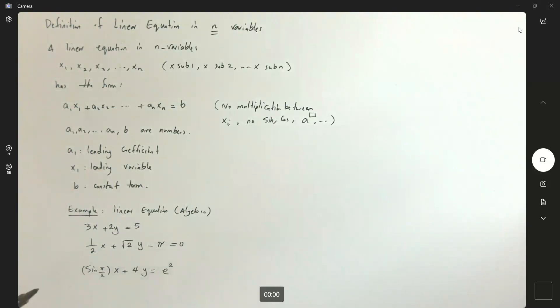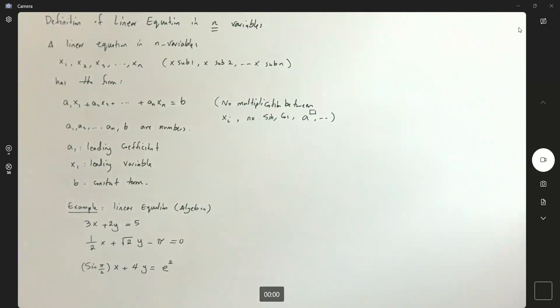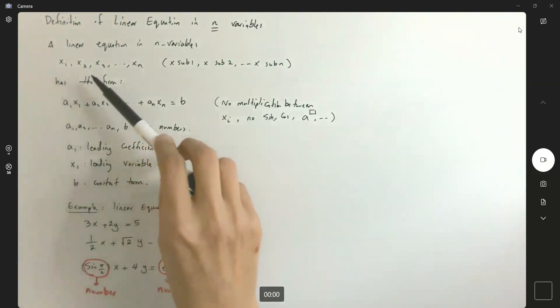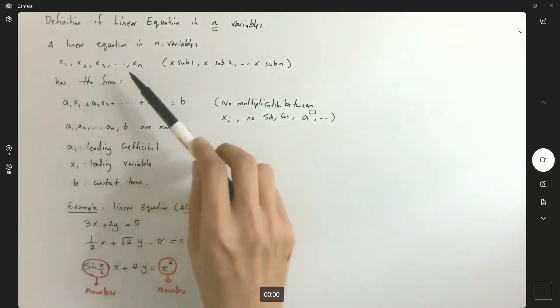Note that each one of these are numbers. So sine of pi over 2 is just 1, so you have a number. And e to power 2, as you remember, e is just a number. And we raise that to the second power is another number. So we can convert this using x sub i's or index variables.